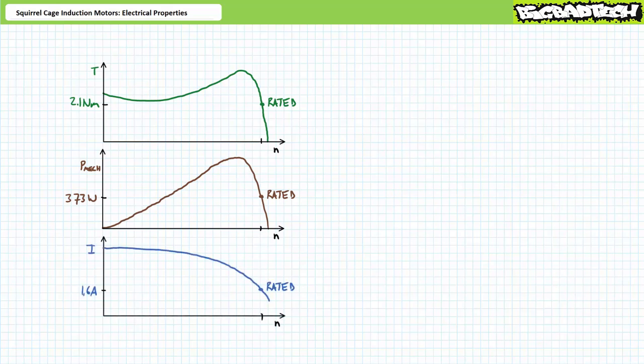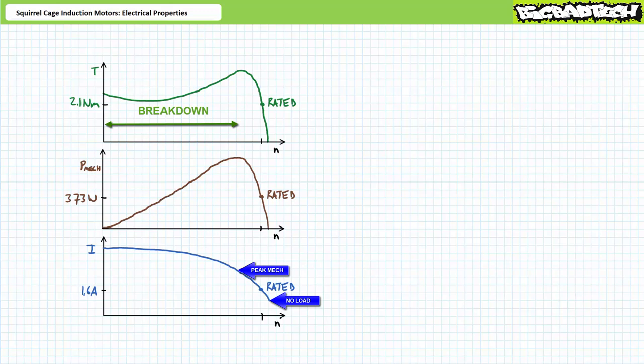Let's first take a look at current. At the no-load condition, the motor draws roughly 960 milliamps. It increases to 1.6 amps at the rated condition and increases again to roughly 2.5 amps at the peak power condition. Inside the breakdown region, where both torque and mechanical power output decrease, current continues to increase until it levels off at roughly six times the rated current — approximately 9.6 amps.